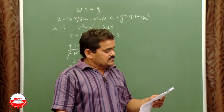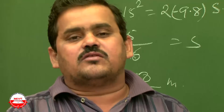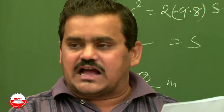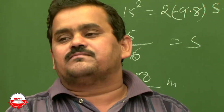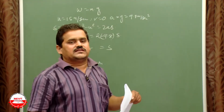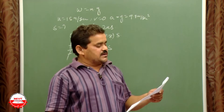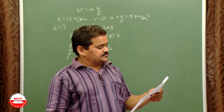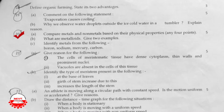Second part: why do you observe water droplets on the outside of a tumbler containing ice-cold water? In the surrounding air, water vapors are present. When these water vapors come into contact with the cold surface of the tumbler, they condense and form water droplets.